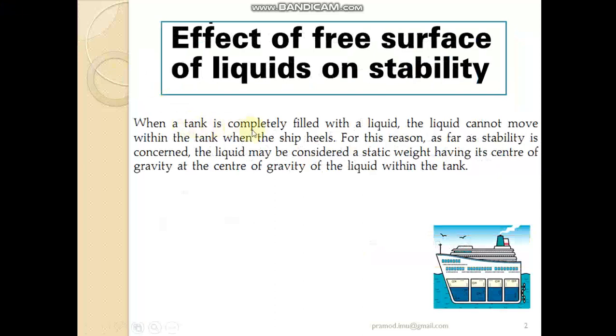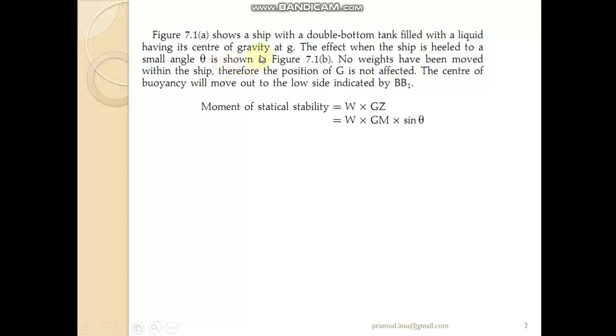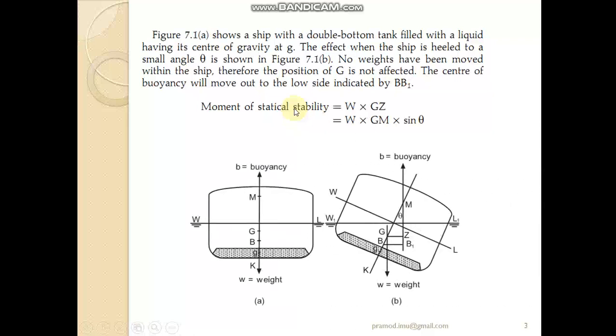When a tank is completely filled with liquid, the liquid cannot move within the tank as the ship heels or trims. For this reason, as far as stability is concerned, the liquid may be considered a static weight having its center of gravity at the center of gravity of the liquid within the tank. The figure below shows a ship with DB tank filled with liquid having its center of gravity at g, when the ship is heeled to a small angle theta.